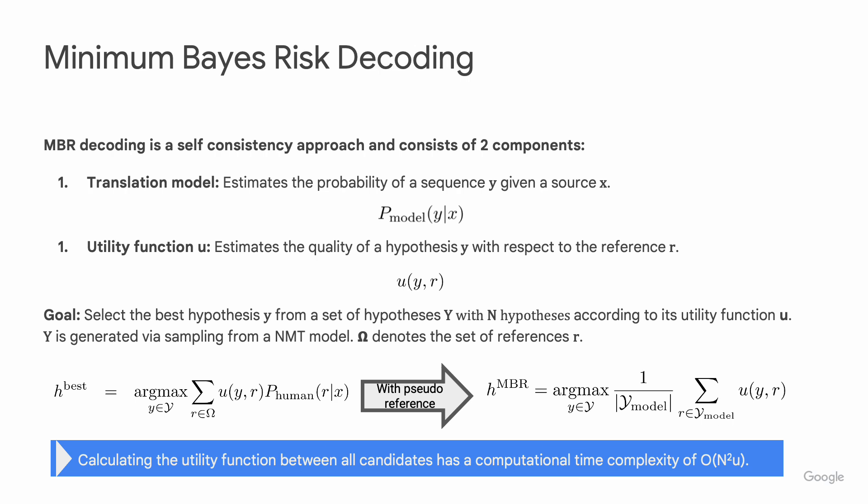To address the limitations of MAP decoding, we look at minimum Bayes risk, or MBR decoding. Unlike MAP decoding, MBR decoding does not solely focus on the most probable translation. Instead, it is a self-consistency approach using a utility function U backed by a neural metric such as MetricX. This utility function helps select translations more likely to be judged as higher quality by human standards. In MBR, a set of hypotheses Y is generated and the goal is to select the one hypothesis most consistent with all other generated hypotheses in the pseudo-reference set according to a utility function.